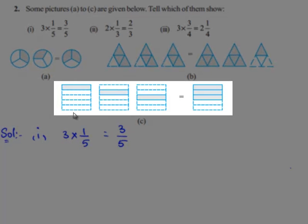When we observe the drawing in C, we observe 3 rectangles. Each rectangle is divided into 5 parts. In each rectangle, out of the 5 parts, one part is shaded. In the first rectangle, the first part is shaded; in the second rectangle, the second part is shaded; and in the third rectangle, the third part is shaded. Since 1 part out of 5 parts is shaded in each of the rectangles, each rectangle represents a fraction 1 by 5. Since there are 3 such rectangles, this represents 3 times of 1 by 5. 3 times of 1 by 5 is equal to 3 by 5.